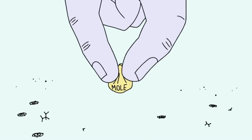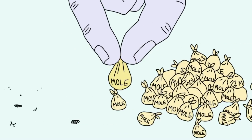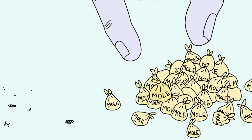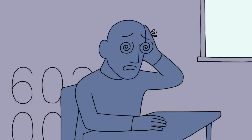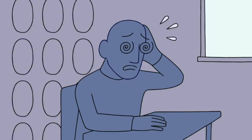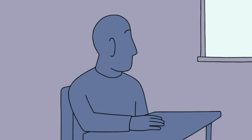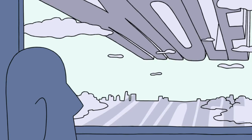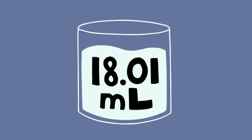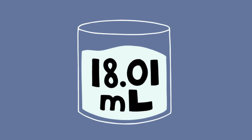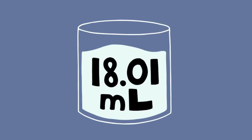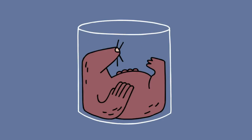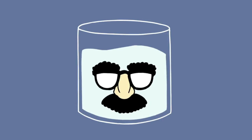Atoms and molecules are so small that chemists have bundled them into groups called moles. Moles are hard for students to understand because they have a hard time picturing the size of a mole, or 602 sextillion. It's just too big to wrap our brains around. Remember our 18.01 milliliters of water? Well, that's a mole of water. But how much is that? Exactly what does 602 sextillion look like?